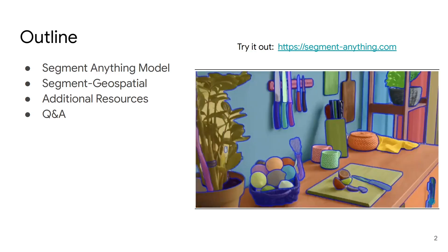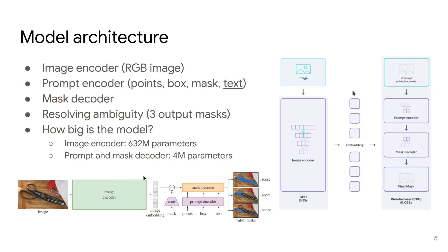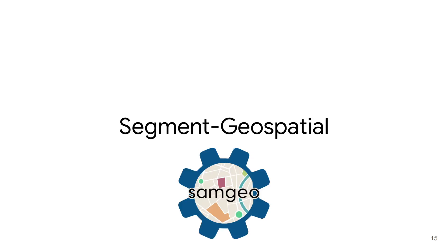On the right here is a demo about the Segment Anything Model. Segment Anything Model is a foundation model that can be used to segment images without the need for additional training. It was released by Meta AI in April 2023. Essentially, what Segment Anything can do is segment any image — you give an image, it does image encoding, and outputs three masks, each with a score, and you can pick whichever one you want. The nice thing is you don't need additional training, so it can segment images it was not trained on. This is why I built on top of it to use it for segmenting remote sensing images.